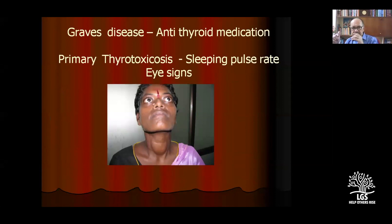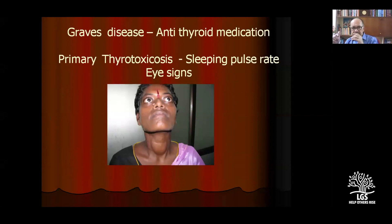For Graves disease, you should know about anti-thyroid medication — carbimazole, propylthiouracil — and beta-blockers. Primary thyrotoxicosis has eye signs: there are 20 clinically relevant eye signs and up to 23 in ophthalmology books. These eye signs are not always asked in the exam because they are not always necessary to know.